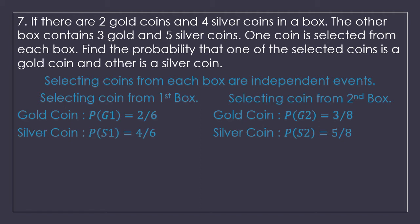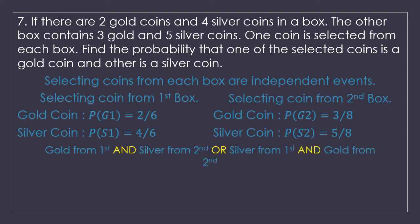Back to the question: find the probability that one selected coin is gold and the other is silver. They have not specified from which box gold and from which box silver. So we consider both options: option one is gold from the first box and silver from the second box; option two is silver from the first box and gold from the second box. Only that way we can fulfill the given condition.